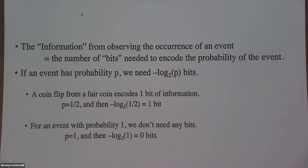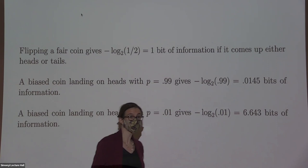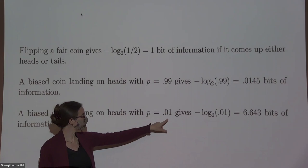If the event is going to happen for sure, it needs zero bits of information. A fair coin gives one bit of information. If it's going to land on heads with probability 0.99, that's really not very much information — it's going to happen anyway probably. But if it lands on heads with probability 0.1, that gives you a whole lot of information; you're very surprised.